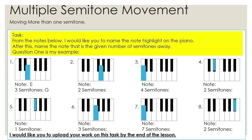Please complete that for questions two, three, four, five, six, seven, and eight. Name the note on the piano, and then name the note that is the given number of semitones away. For question two, what's the note on the piano and what note is two semitones away from that? Take your time and make sure you really get it correct. Thank you very much for listening. I hope you're all well.